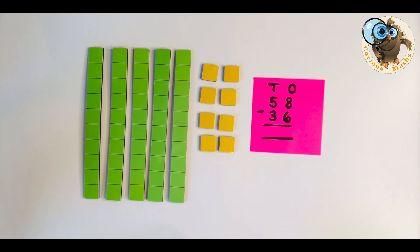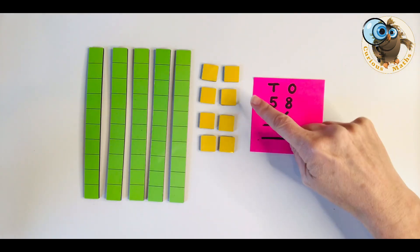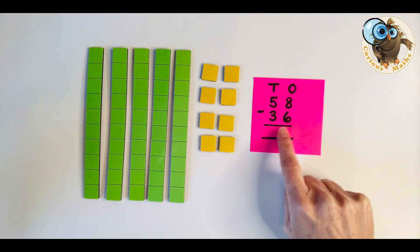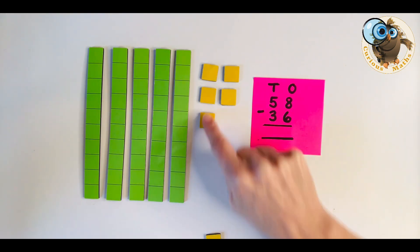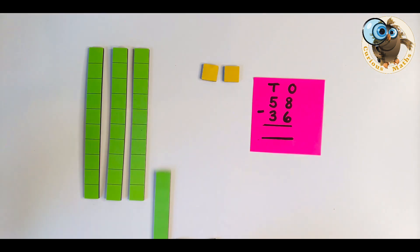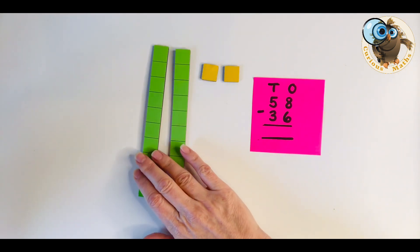So this is an example of a build for 58 using base 10 and for this question what we would look at first is the ones column. I've got eight ones and I need to subtract six ones. I've got five tens and I need to subtract three tens. And what we're left with is our answer of 22.